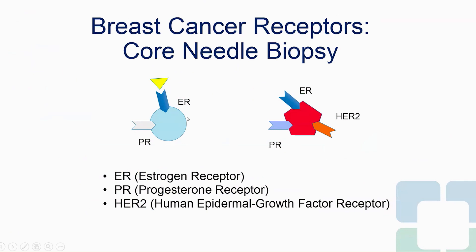Let's look at this cell on the right. This is a normal breast cell. The best way to think about it is that a normal breast cell has an estrogen receptor and a progesterone receptor. The hormones in your body — estrogen and progesterone — float around in your bloodstream, attach to this breast cell, and that's what tells the cell to grow and divide.